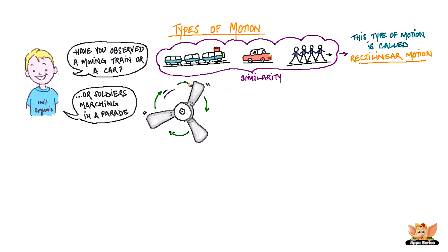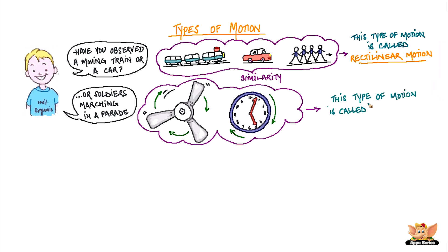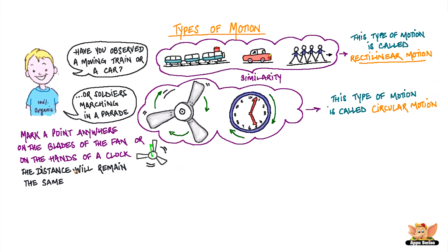Observe the blades of a rotating fan and the movements of the hands on a clock. You will see that they move in a circle. This kind of motion is called circular motion. Mark a point anywhere on the blades of the fan or on the hands of a clock. You will see that the distance of this point from the center of the fan or the clock will remain the same as they rotate.